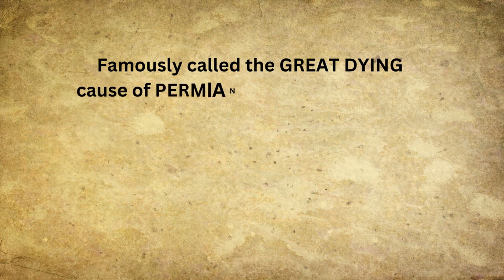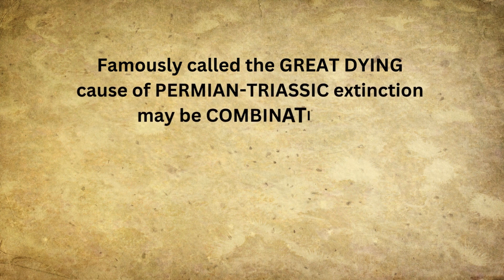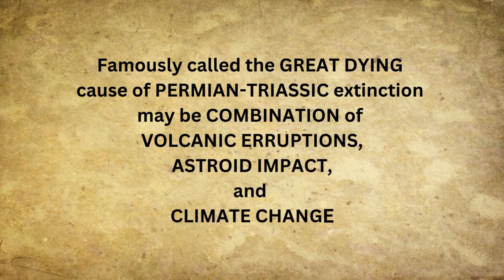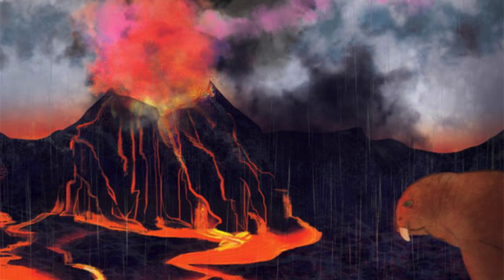Famously known as the Great Dying, the cause of the Permian-Triassic extinction event is not fully understood, but it is believed to have been triggered by a combination of volcanic eruptions, asteroid impacts, and climate change. The event may have been initiated by the eruptions of the Siberian Traps, one of the largest volcanic activities in Earth's history, which released massive amounts of lava and greenhouse gases into the atmosphere. This led to a series of devastating consequences including global warming, ocean acidification, and severe reduction in oxygen levels in the ocean.